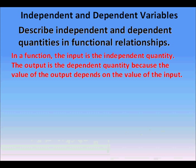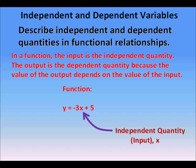We're going to describe independent and dependent quantities in functional relationships. In a function, the input is the independent quantity. The output is the dependent quantity because the value of the output depends on the value of the input. Here's the first function we'll look at: y equals negative 3x plus 5. Here we have the independent quantity x and the dependent quantity y. We have to know the value of x before we can use the function to figure out the value of y.